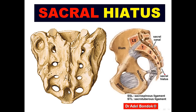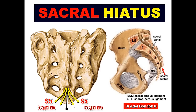The sacral hiatus permits the passage of the filum terminale, which is the continuation of the pia mater, the fifth sacral nerve, and the coccygeal nerve. Clinically, this sacral hiatus is important because anesthetics can be inserted through it to perform epidural anesthesia, called caudal anesthesia.